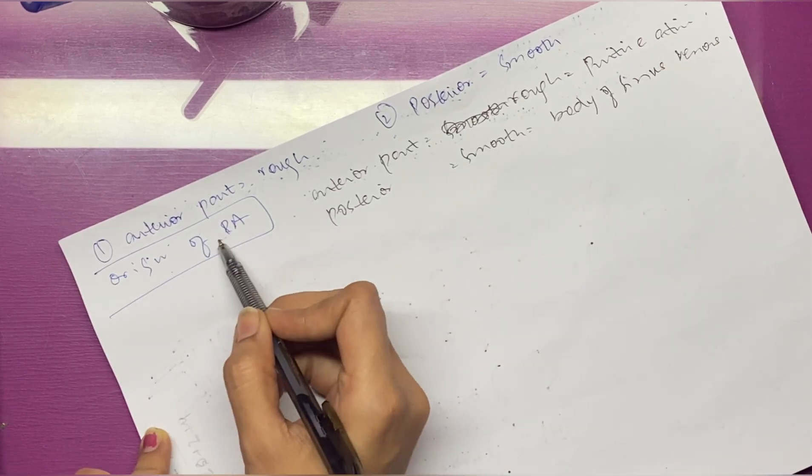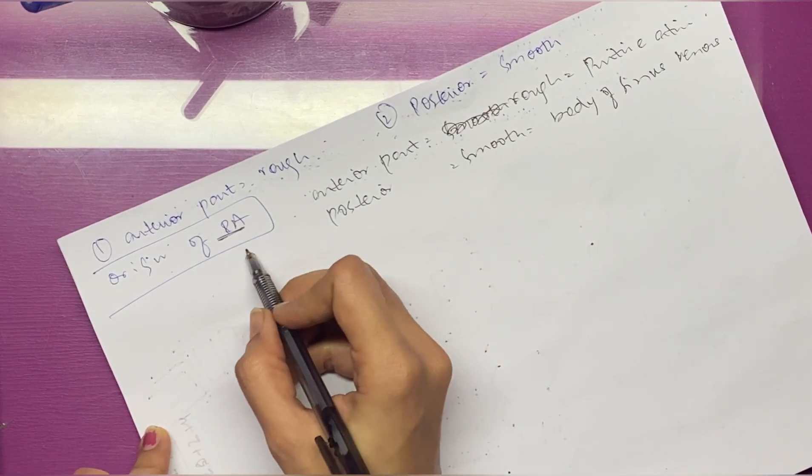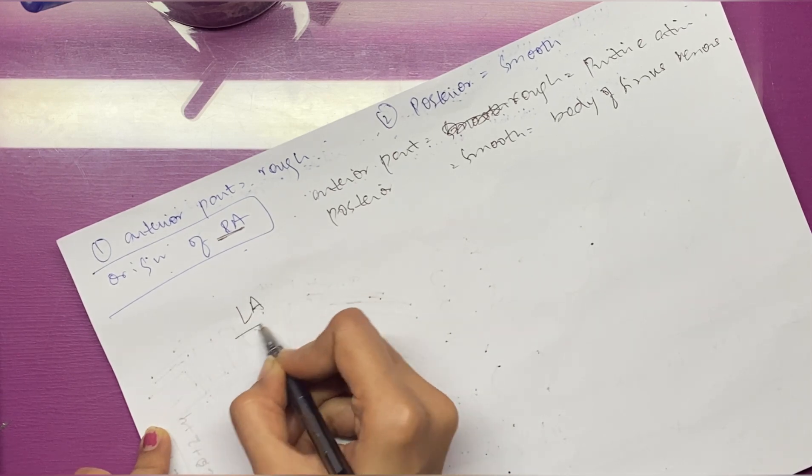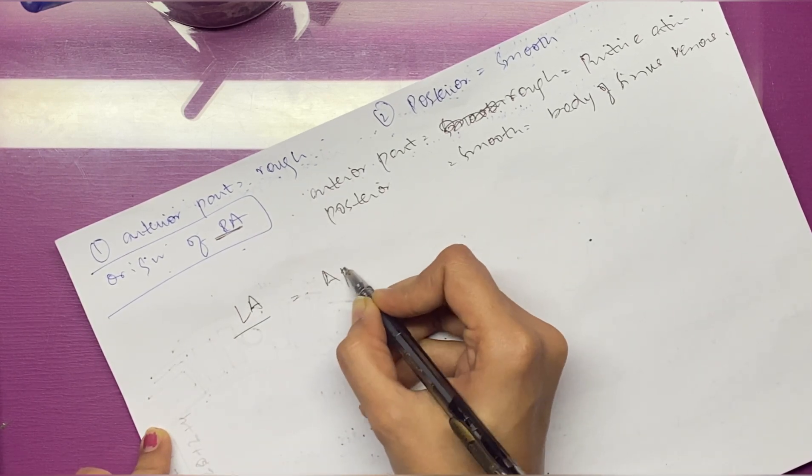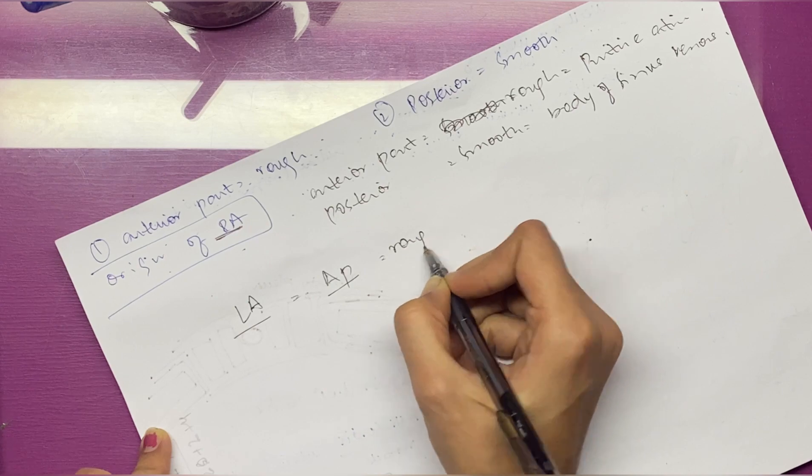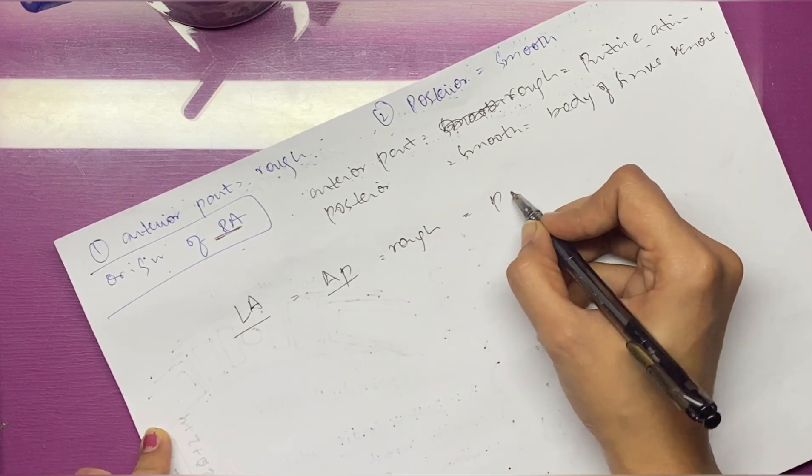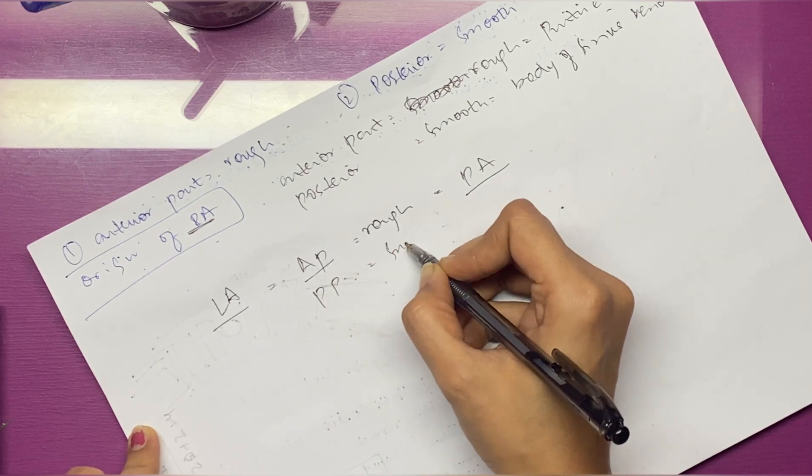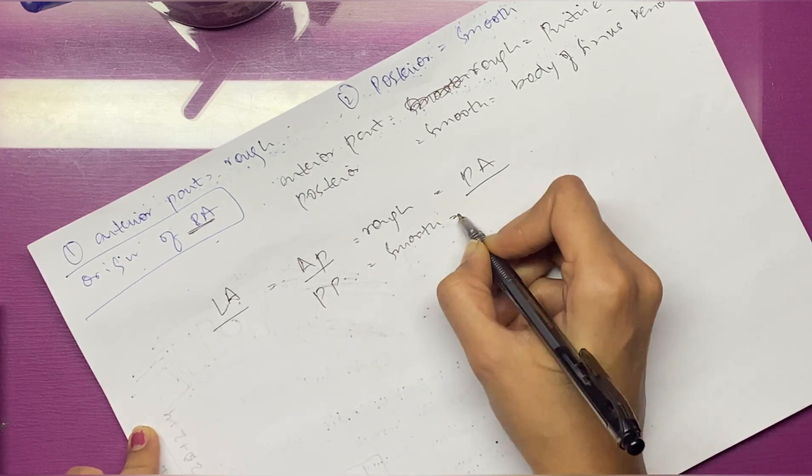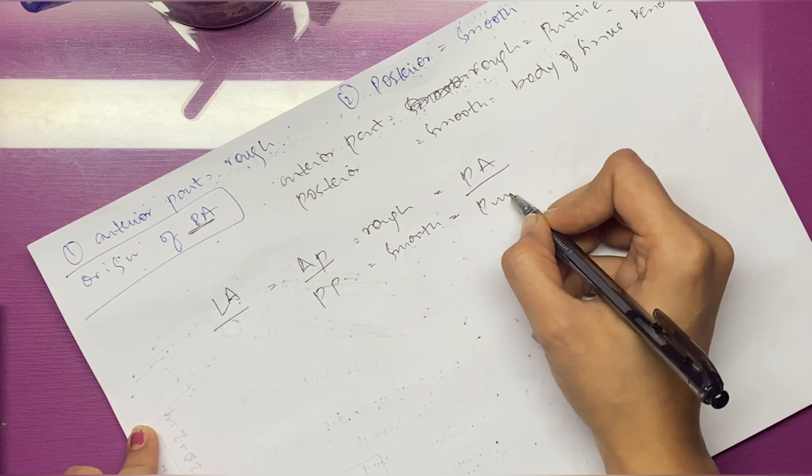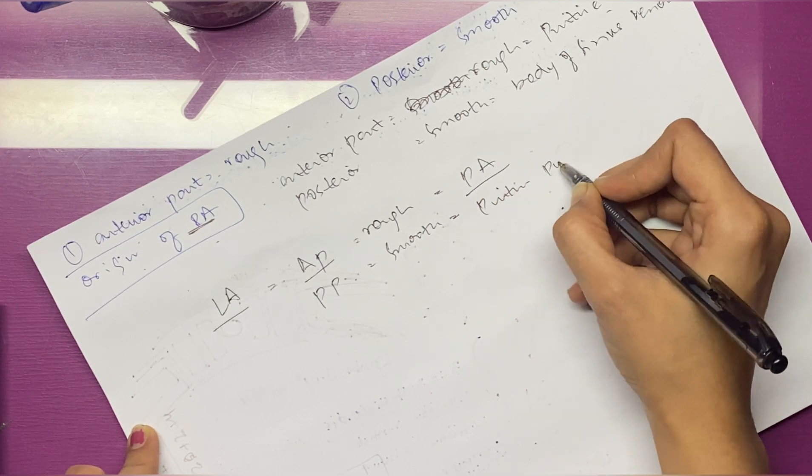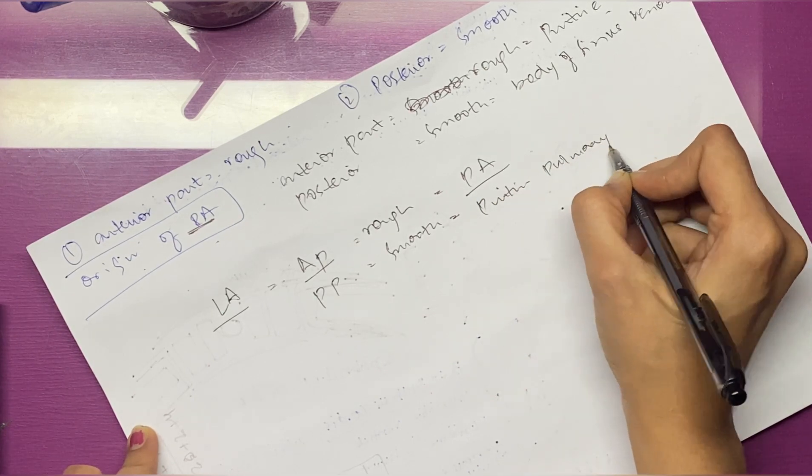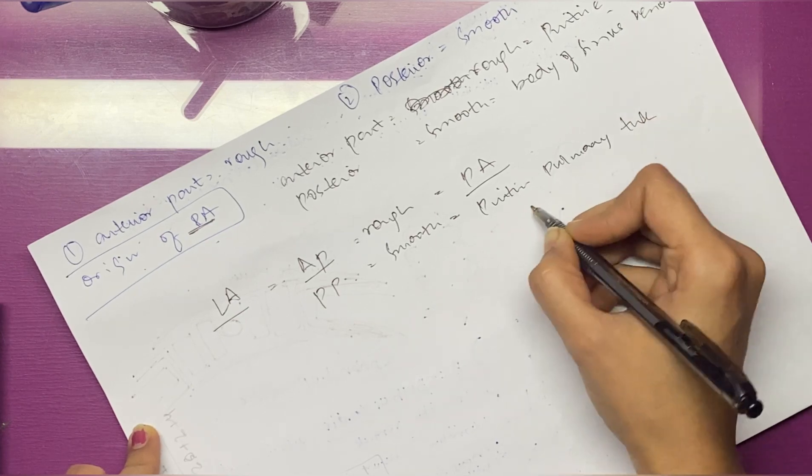This is only for the right atrium. What happens with the left atrium? The left atrium's anterior part, which is the rough part, is actually formed by the primitive atrium itself—we knew that. But the posterior part, that is the smooth part, according to FA, is formed by the primitive pulmonary trunk. I will tell you about the right atrium, you'll get it at the end.